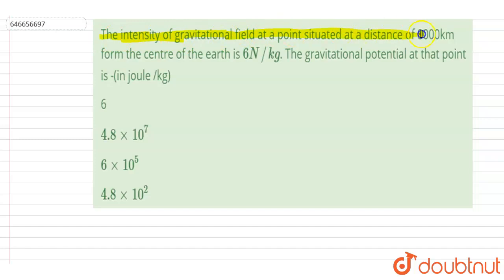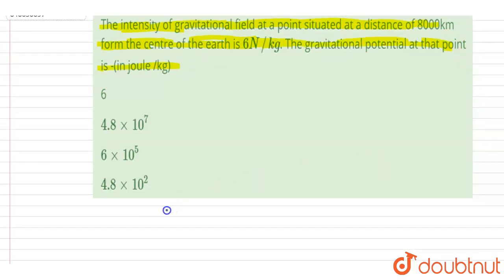Gravitational potential at that point is - so if I talk about the intensity at any point, gravitational intensity I, it will be equals to GM by R squared. We know this.